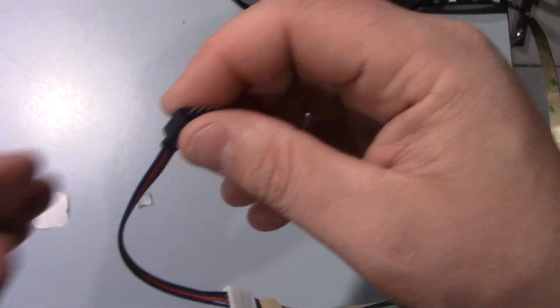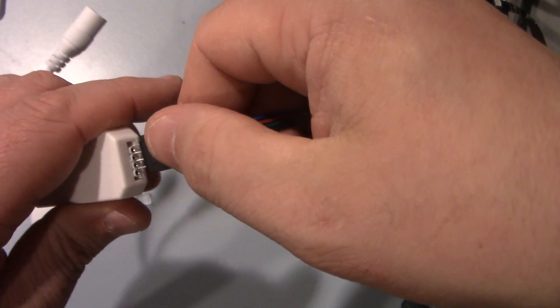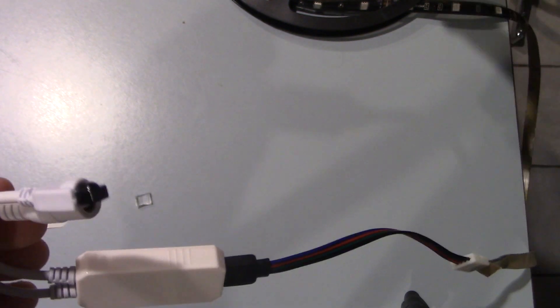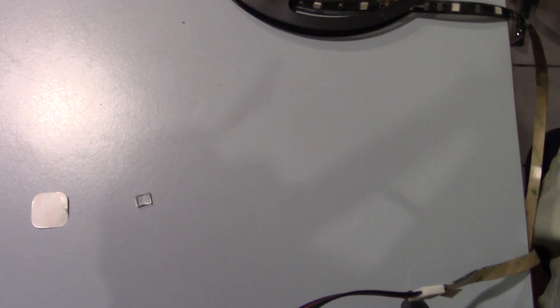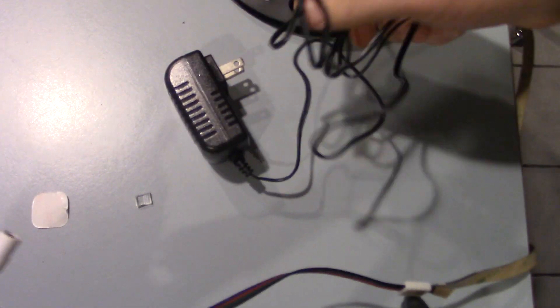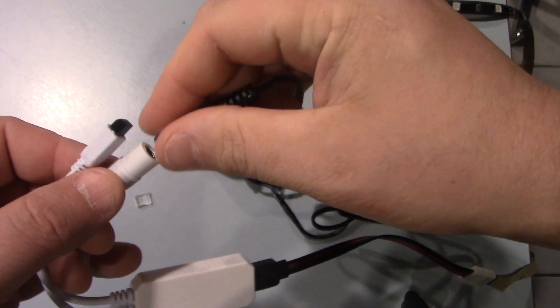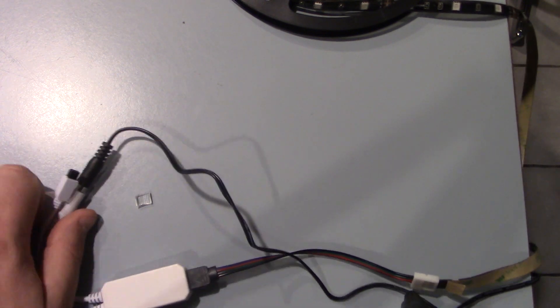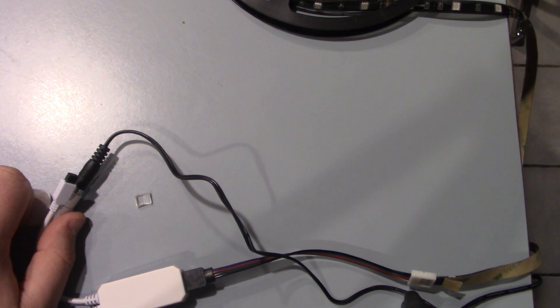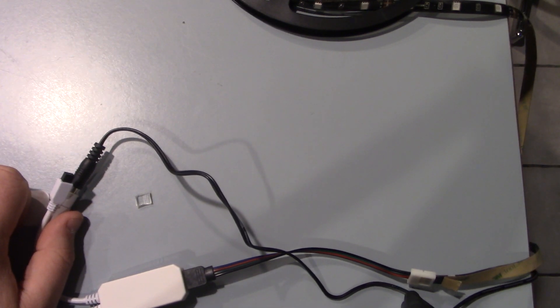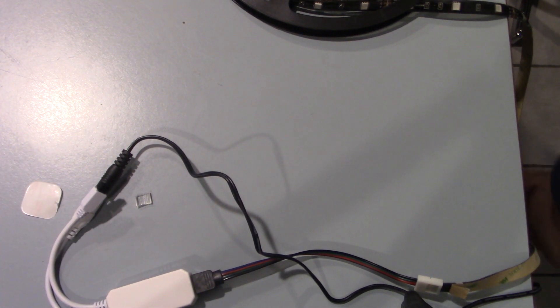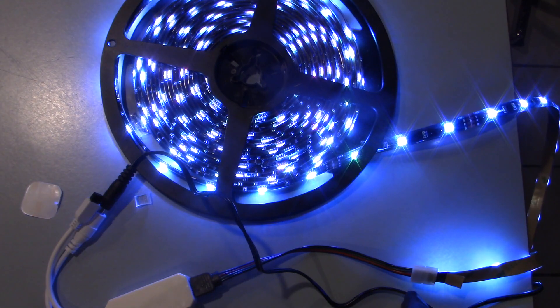Now we have this. We're going to connect this to our Wi-Fi device, as such. It simply snaps in like that, and this we're going to plug into our 12 volt adapter here. So I'm going to plug this in just like this, and this is the actual IR for the remote control.